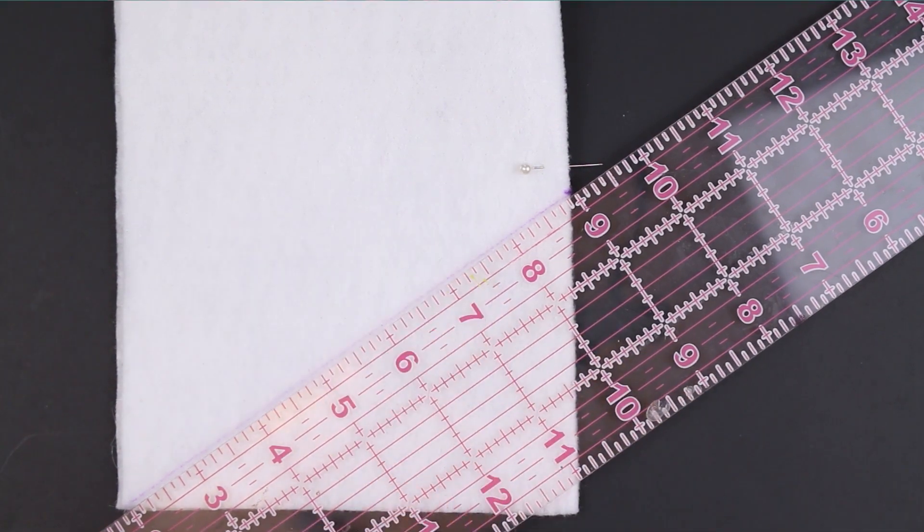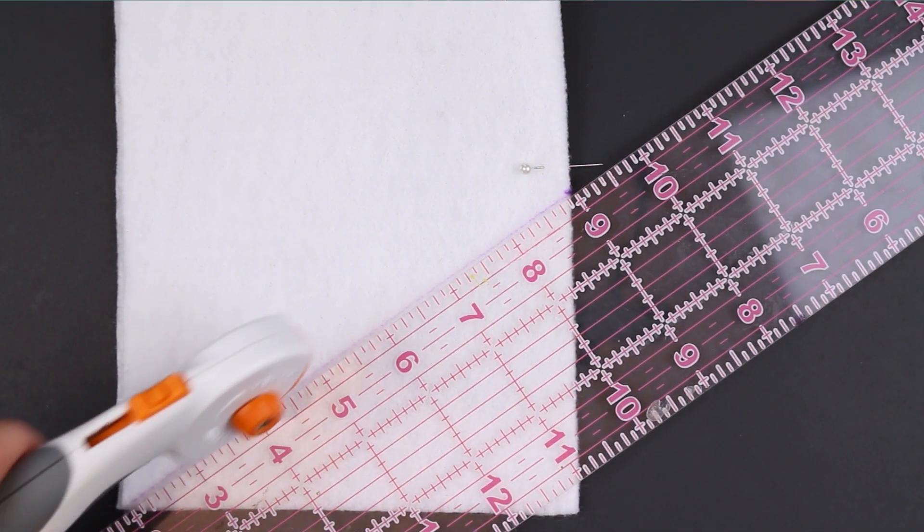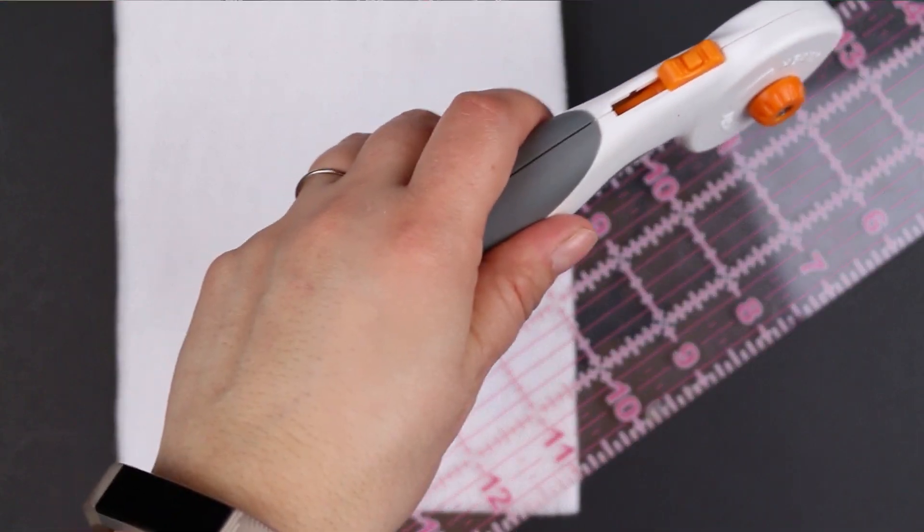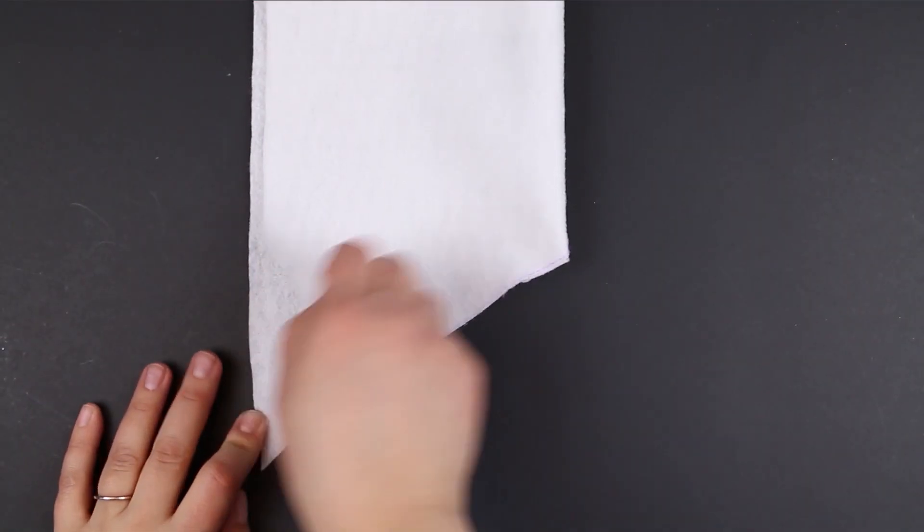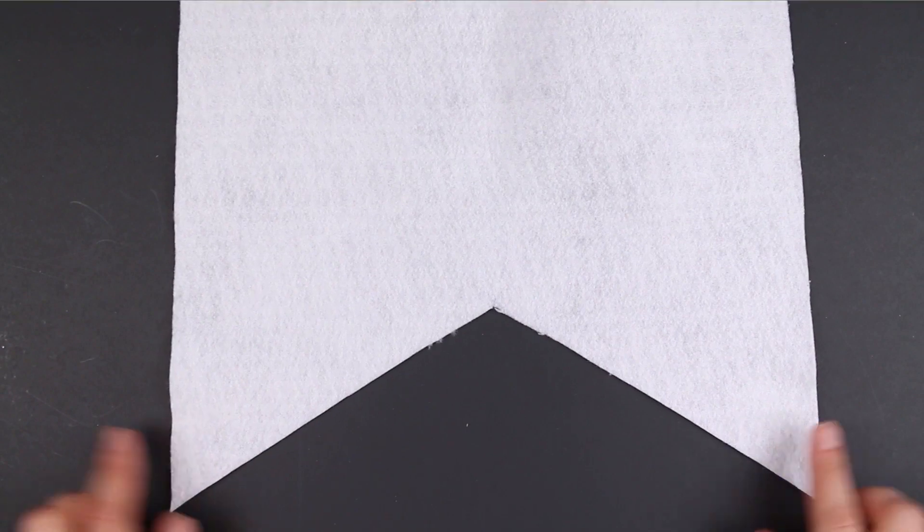Then using scissors or a rotary cutter, cut along that line. When you open your banner right side up, you will have that neat notch at the bottom of the banner that you see on Game of Thrones.